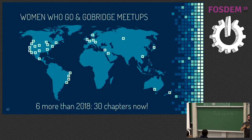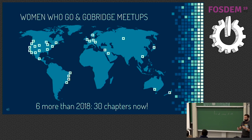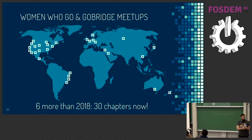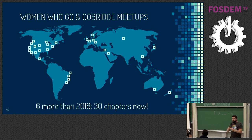Women Who Go keeps growing — they now have 30 chapters, six more than last year, spread across many places around the world. If you want to create a new chapter, please do. There are two people in the room who are managers of Women Who Go and can help you get started.